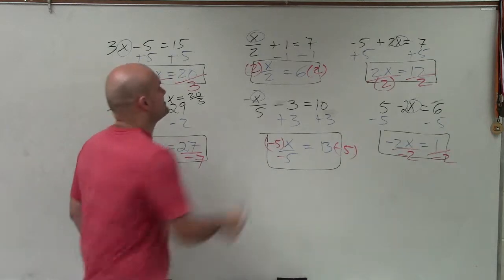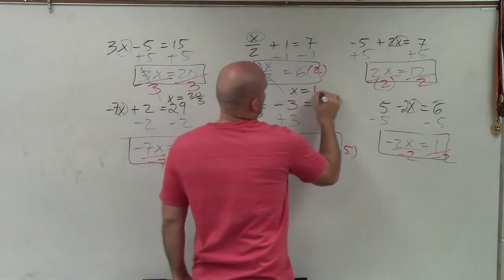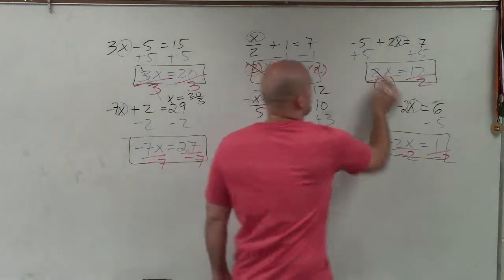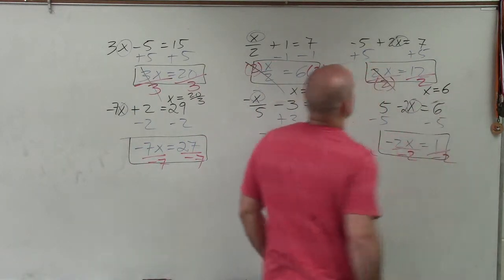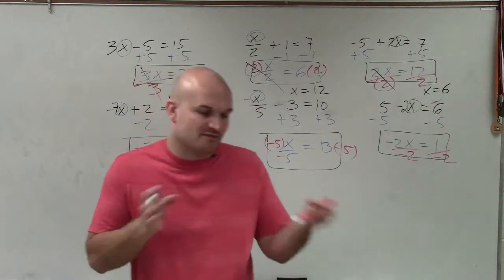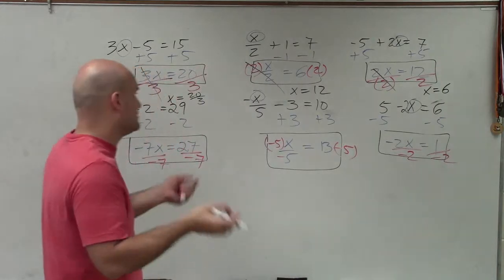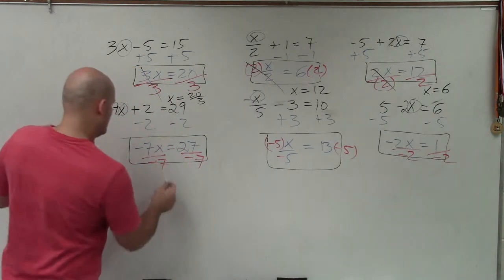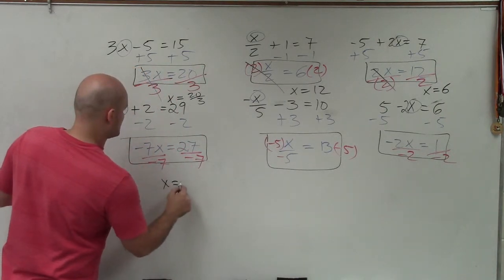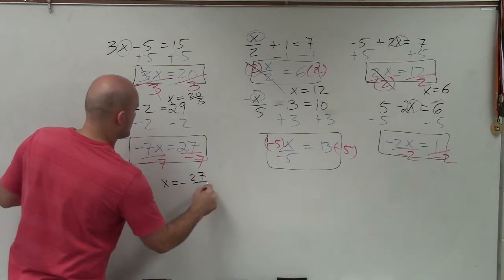Again, I've made up these problems. Let's just solve them. x equals 12 here. x equals 6. When you undo the inverse operation of multiplying, dividing, that goes to 1, which leaves your variable by itself. This just becomes x equals negative 27 over 7.